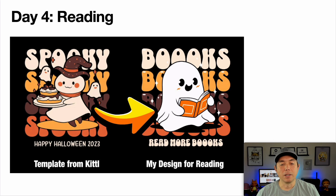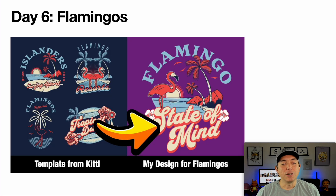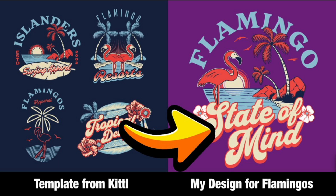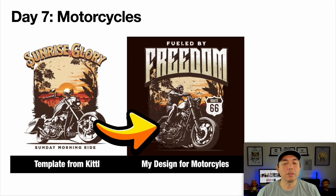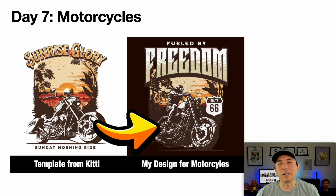Day five is s'mores — I used a vintage design and swapped out the graphics to put some s'mores in. Kittl has designs for everything including s'mores. Day six is flamingos — I used a template with multiple design elements, taking the flamingo from one place, the sunset from another, and text from another. Day seven is motorcycles — after uploading I realized I couldn't use Route 66 since it got tagged, so I swapped in a different name. I also changed it from a white to a dark background because dark shirts tend to perform better.